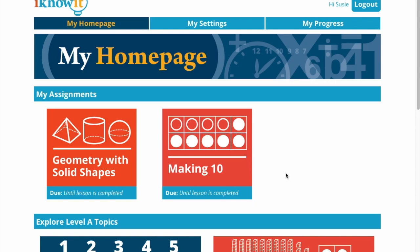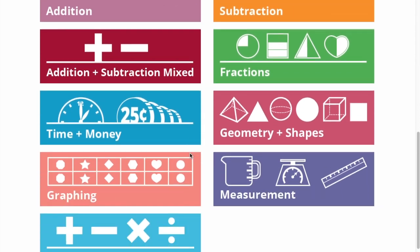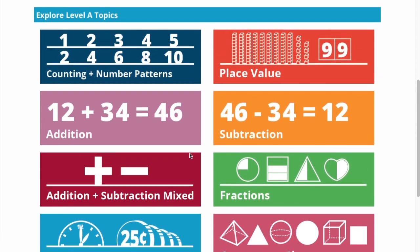So as you can see here, I've made up my student. Her name is Suzy. And Suzy has two lessons that I've given her for assignments. And if you scroll on down below here, you can see that she has access to all the other first-grade lessons, too.